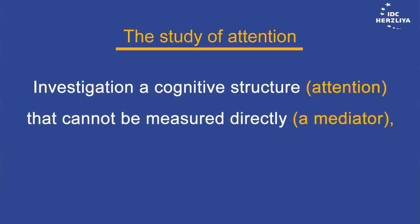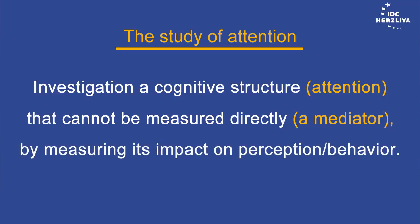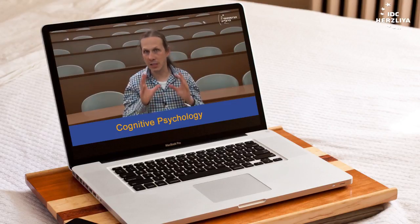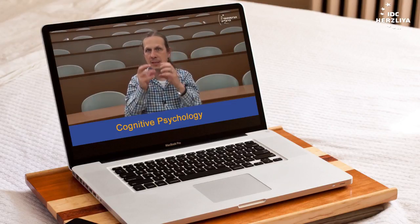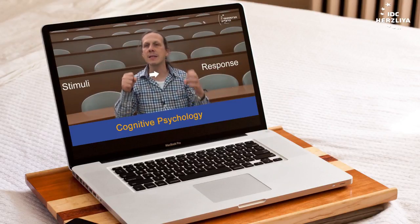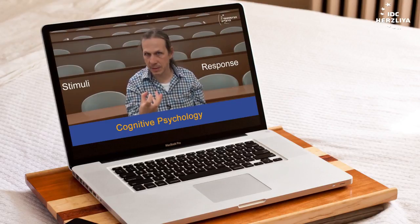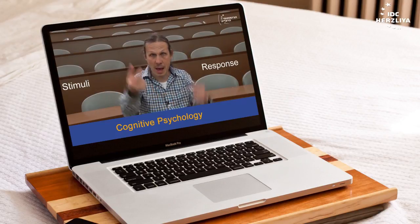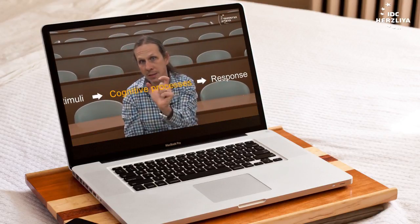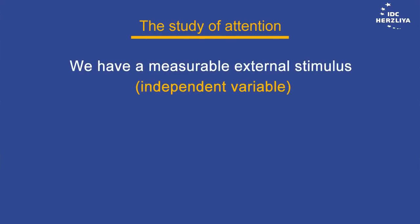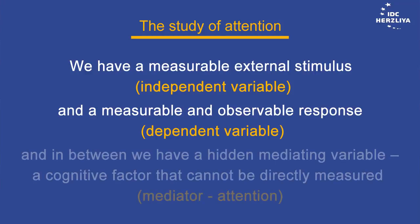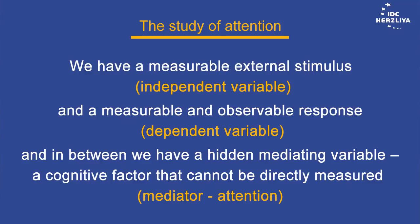The study of attention is an investigation of a cognitive process that cannot be measured directly — only by measuring its impact on behavior. The basic idea of cognitive psychology is that you cannot explain human behavior just as a system of stimuli and responses, or a system of reinforcements. There is something else — there are hidden processes that happen in the middle: cognitive processes.